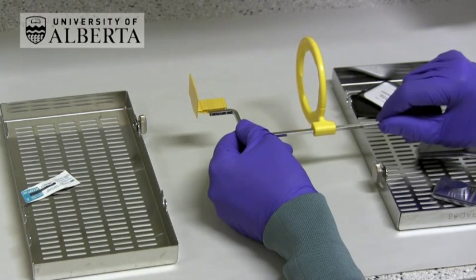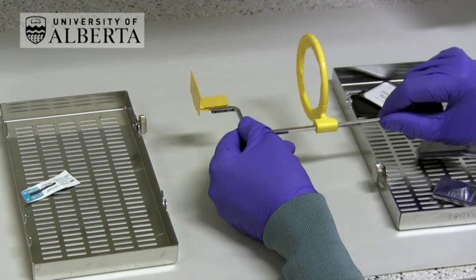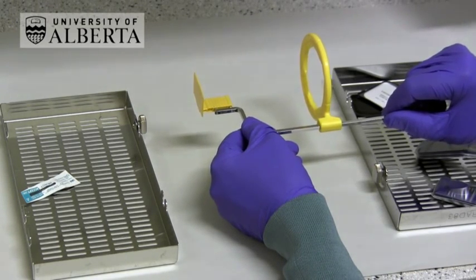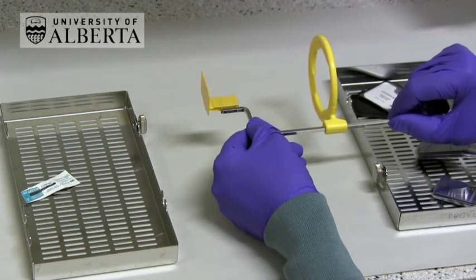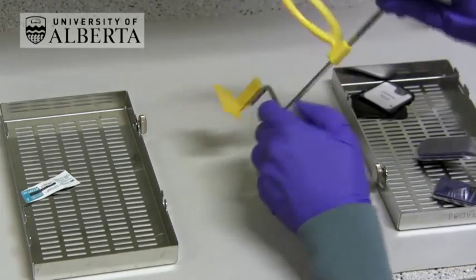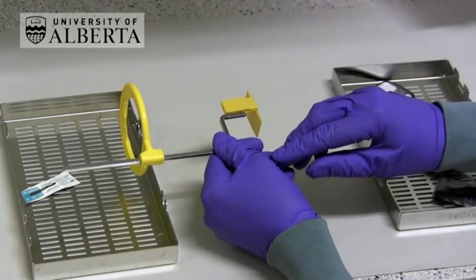The way the instrument is assembled at the moment, we can take a periapical of the premolar or molar region of quadrant 2, like this, or quadrant 4, like this.